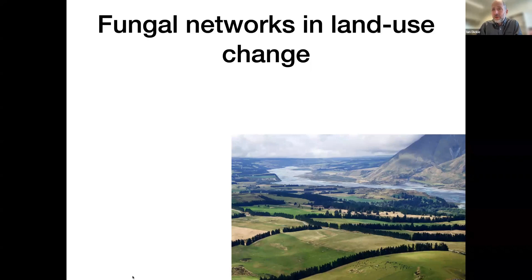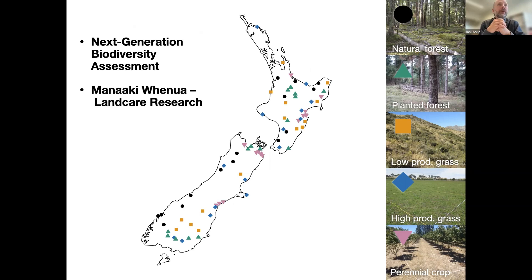Now let's switch topics. I want to talk about land use change because it's actually really similar to invasive species — you have monocultures or low-diversity plant communities of primarily exotic species, so it looks a lot like an invasion. To study these, we did a project called the Next Generation Biodiversity Assessment, work I did when I was at Manaaki Whenua Landcare Research and then carried on afterward. We sampled plots across all of New Zealand spanning five different land uses.